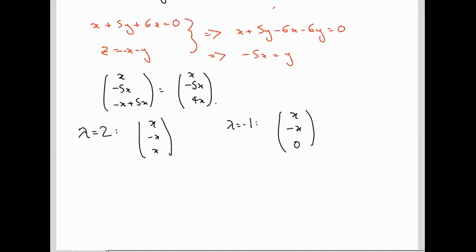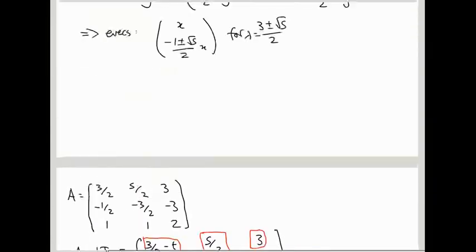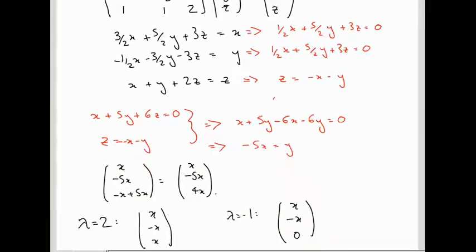In other words, the solution of the system of simultaneous equations had a free variable x. Going back up, that was also true for this 2x2 example 2, 1, 1, 1. We had an x, and then we had this minus 1 plus or minus root 5 over 2x. Again, there's a free parameter x here. So this is always true.